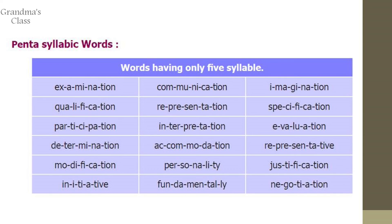Next one is pentasyllabic words — words having five syllables. First example: examination, split as ex-am-i-na-tion. Next: communication — com-mu-ni-ca-tion, five syllables. Then imagination — i-mag-i-na-tion. And qualification — qual-i-fi-ca-tion. These are all five-syllable pentasyllabic words.